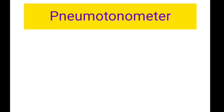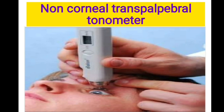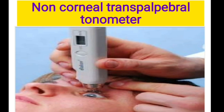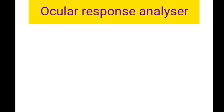Pneumotonometer is also based on the principle of applanation tonometry. It measures IOP by flattening the cornea with a graded flow of gas against a flexible diaphragm. Very useful in scarred corneas, edematous corneas, and over soft contact lenses. The non-corneal transpalpebral tonometer measures IOP through the eyelids overlying the sclera; a free-falling rod rebounds against the tarsal plate to give the IOP measurement, with no risk of corneal damage. The ocular response analyzer (ORA) is an adaptation of the NCT — it uses an air puff but corrects for the effects of corneal hysteresis on IOP measurement, giving better readings compared to standard NCT.